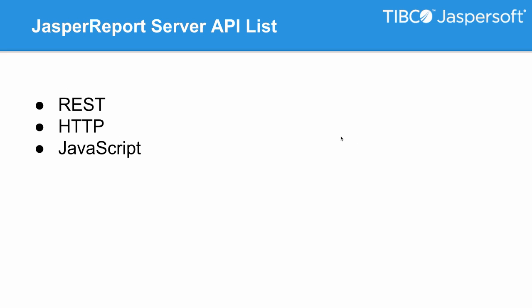There are three different APIs available to you when working with the Jasper Report server: the REST API, the HTTP API, and the new JavaScript API.